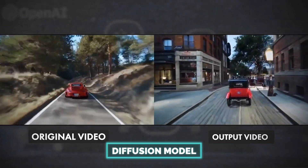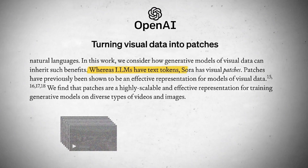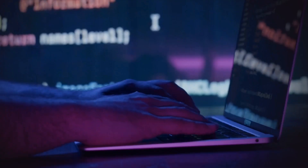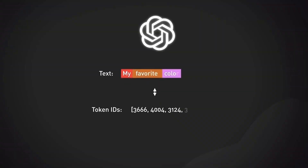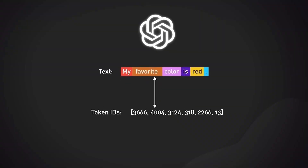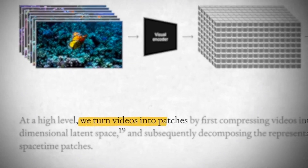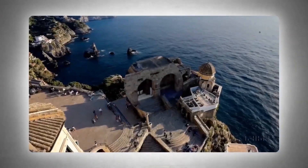Sora uses the diffusion model to generate video. What is the diffusion model? A diffusion model starts with a frame that looks like visual static — like a fuzzy, grainy image you see on an old TV when there's no signal. It then gradually refines this image over many steps guided by the prompt, slowly transforming the static into a clear, detailed video that matches the description in the text prompt.